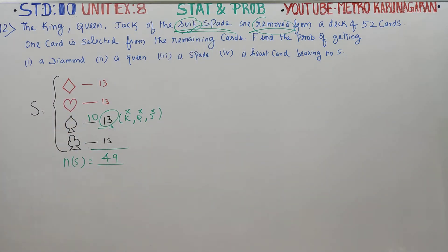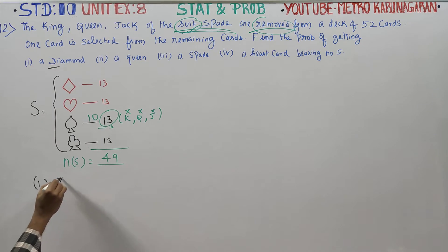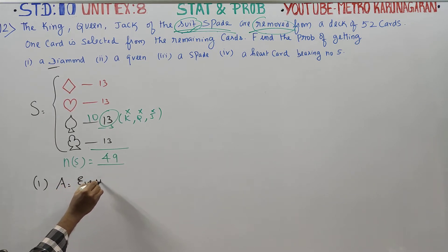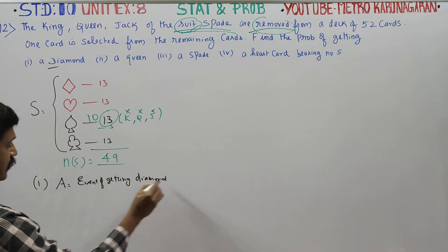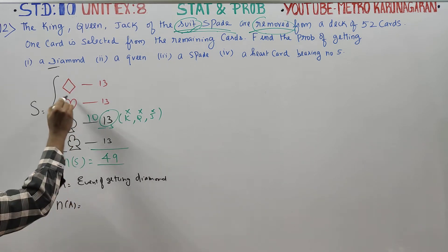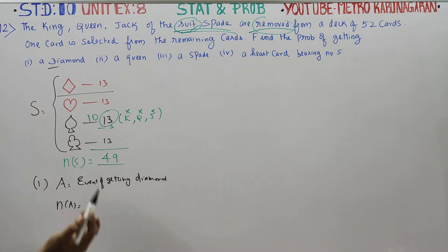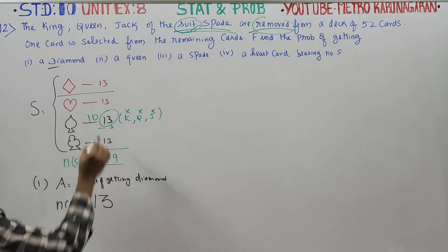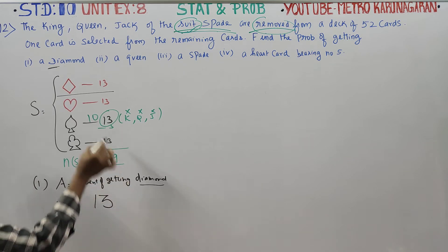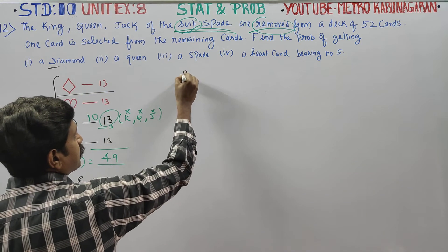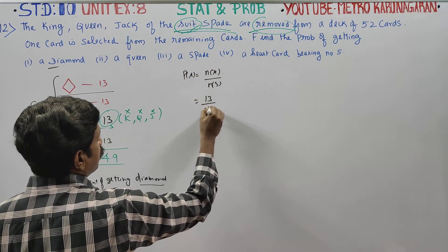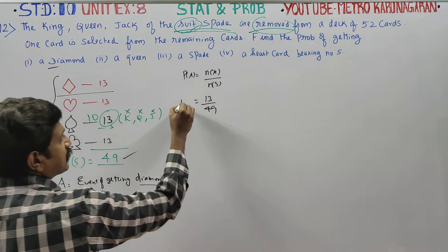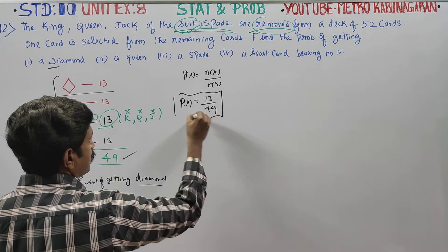First question: find the probability of getting a diamond. Let A be the event of getting a diamond. n of A is equal to 13. Therefore, probability of A is equal to n of A by n of S, which is 13 by 49. This is the answer to the first question.